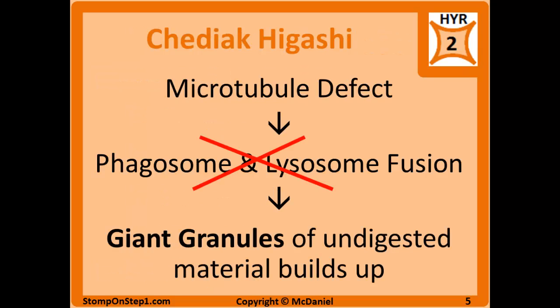Chediak-Higashi is a defect in the microtubules themselves. Microtubules play an important role in helping the phagosome and the lysosome fuse. The phagosome is the compartment within a phagocyte where it has consumed foreign material like bacteria or dead cells, and the lysosome carries all the enzymes and materials to degrade that material. You need the phagosome and lysosome to fuse for those enzymes to destroy the consumed material. If that's not happening, your immune system is not going to work very well.